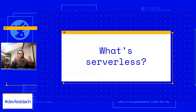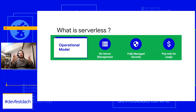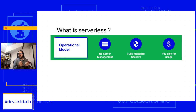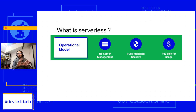Serverless can be seen in two different ways. First, as an operational model: you have nothing to manage — no server, no network. All the firewalls, routing, server management, and patching are performed by the cloud provider. In addition, you pay only when you use the service and don't have to provision or deprovision servers. You pay only when your service runs, and when you have no traffic, you pay nothing.